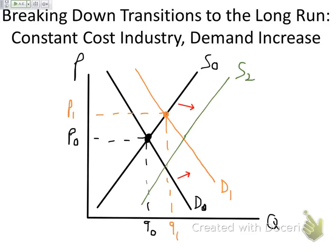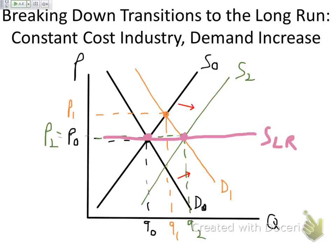S2 happens after D1. So now this new long run equilibrium point is associated with Q2. And because it's a constant cost industry, production has expanded and P2 is equal to P0. If we want to make our long run supply curve, we just take the first long run equilibrium point and the second long run equilibrium point and connect them. That is our long run supply curve. Notice that it is flat — it is perfectly elastic. The long run supply curve is more elastic than the short run supply curves. So that is what a constant cost industry looks like.